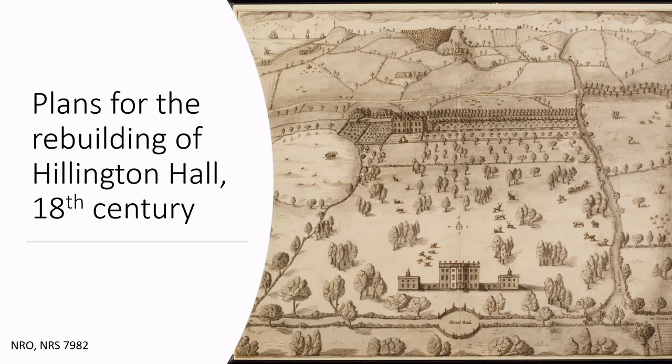This drawing comes from the Norfolk Records Society collection and shows plans of Sir Martin Foulkes and Sir William Brown for the rebuilding of Hillington Hall. In the plans, we can see many features including trees, a lake, deer, gardens and a church in the distance. This document dates from the 18th century.